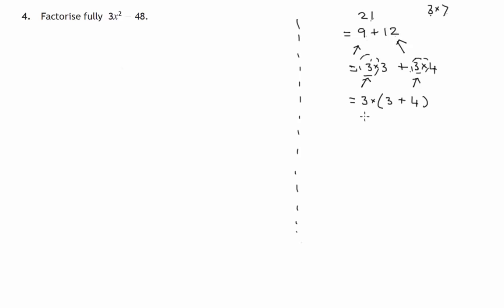It also works with subtraction. Suppose we've got 10, which we could write as 25 minus 15. Neither 25 nor 15 is a factor of 10, but each of these numbers in this difference has a factor of 5. That's 5 times 5 and 5 times 3.